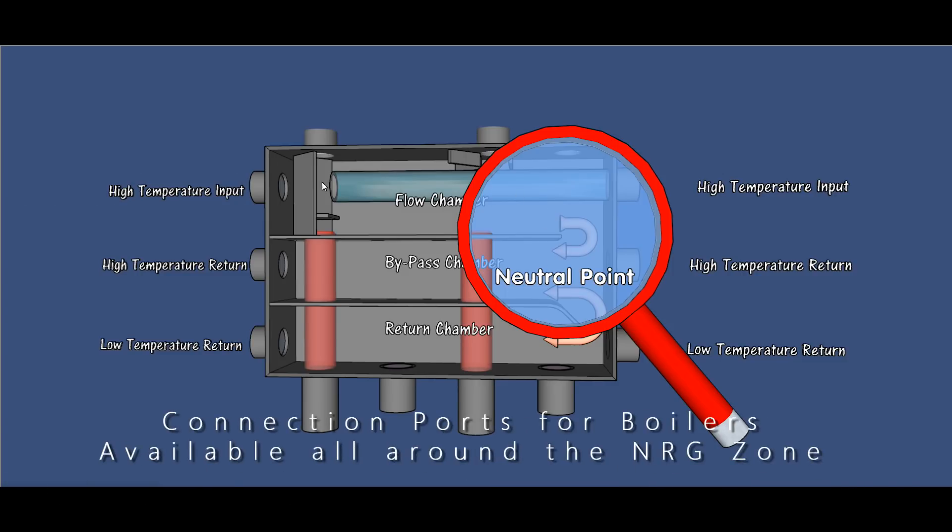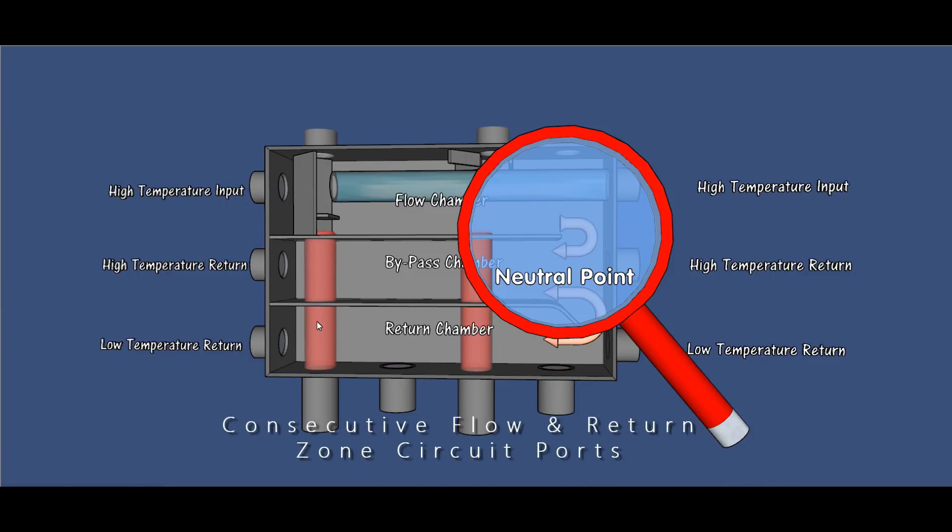If you're pumping to a boiler from the Energy Zone manifold, you pump on the return connection to the boiler. Remember, the flow to a boiler is the return pipe also. If you're pumping to a zone, for example, you'd pump on the flow out.